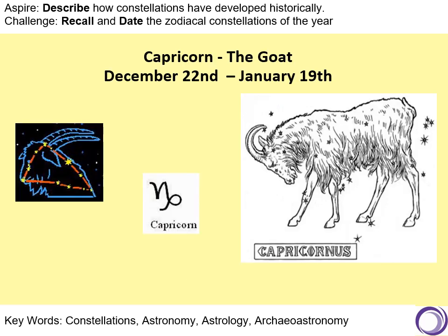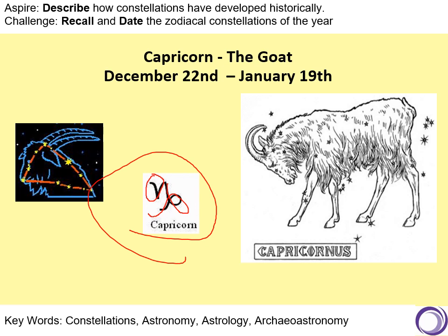Our final constellation is Capricorn, also known as the goat. The dates are December 22nd to January 19th. It has a very strange symbol — like a curly V with a kind of ribbon bow around it. There's not really a story behind Capricorn; all it means is the horned goat. And that is my very short journey through our astrological zodiacal constellations.